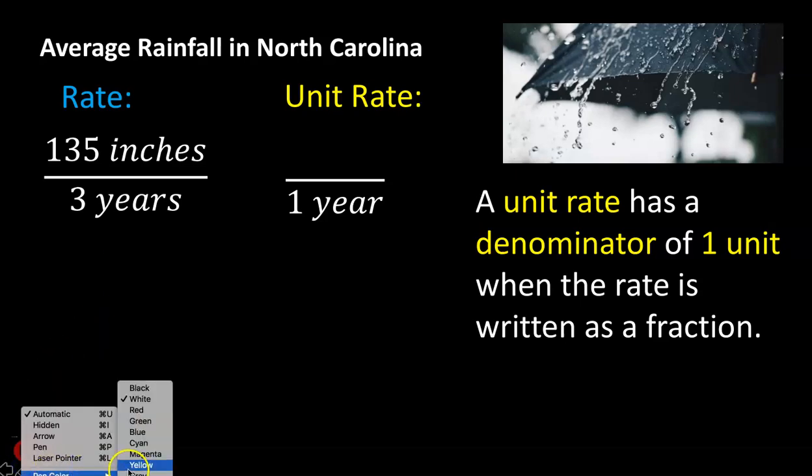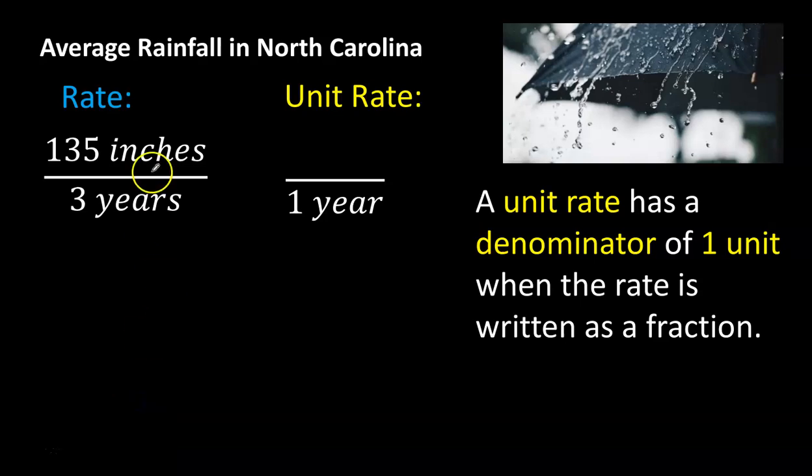We can solve this problem using proportions. Remember, a proportion is when you have two equivalent fractions with an equal sign in between. To move from three years to one year, that's a decrease, so we are scaling down and we are going to be dividing. Three years divided by three would give you one year.